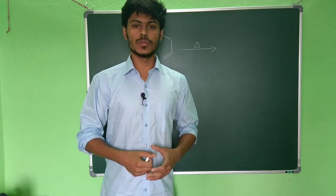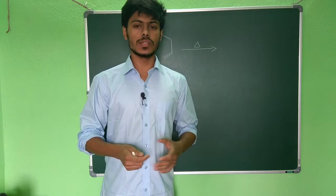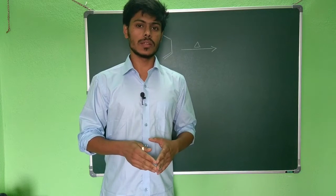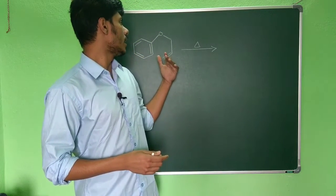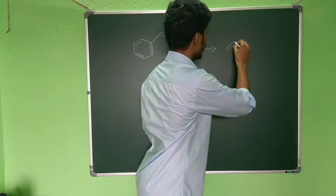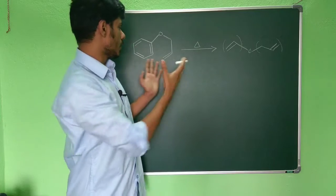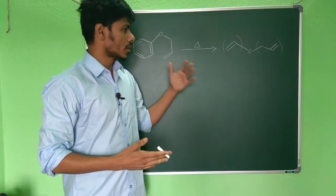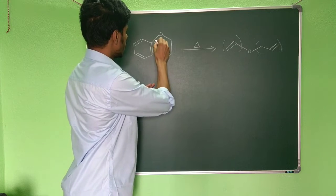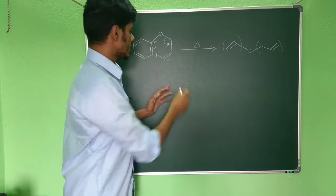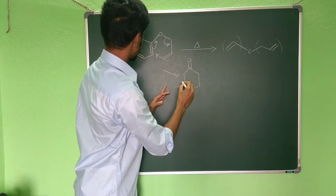Welcome to Chemistry Lover. Today I will discuss the Claisen rearrangement of aromatic systems. You can see this is an aryl allyl ether. Normally you know the Claisen rearrangement of allyl vinyl ether — this is the allyl part and this is the vinyl part — but here it is an aryl allyl ether. In the first step, there will be a 3,3-sigmatropic rearrangement, which is the Claisen rearrangement, and you will get an intermediate like this.